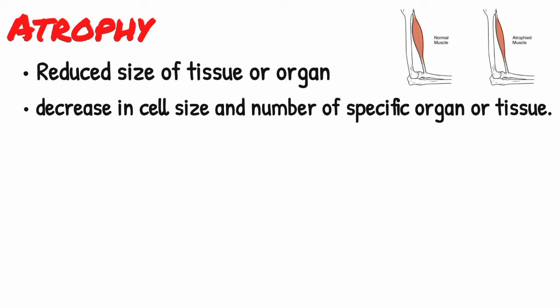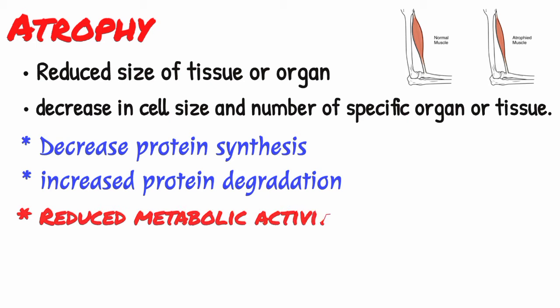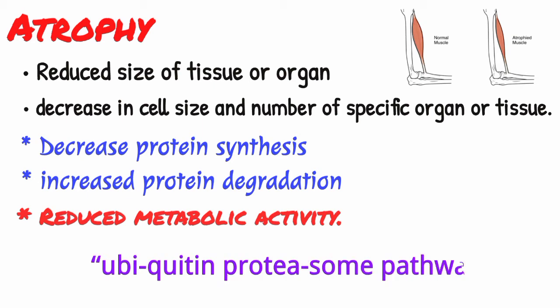Atrophy results from decreased protein synthesis and increased protein degradation in cells. Protein synthesis decreases because of reduced metabolic activity. The degradation of cellular protein occurs mainly by ubiquitin proteasome pathway.